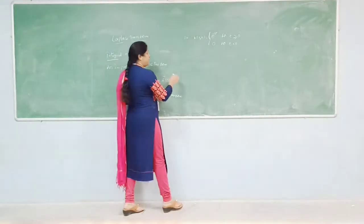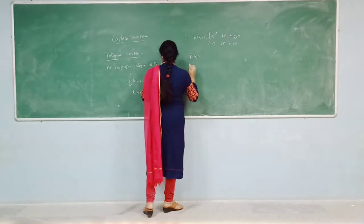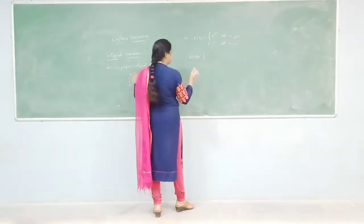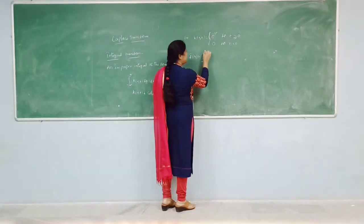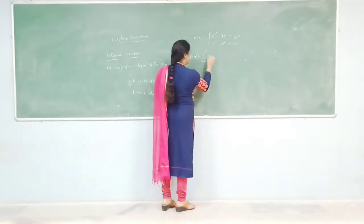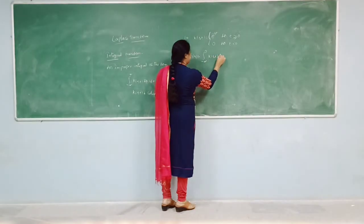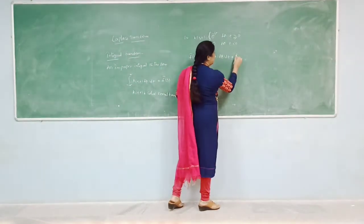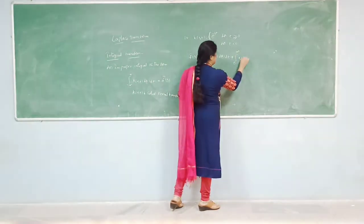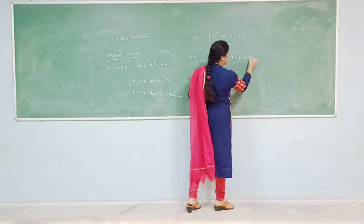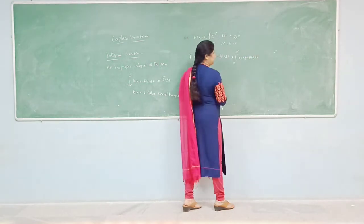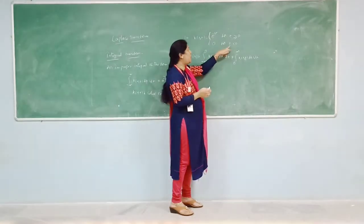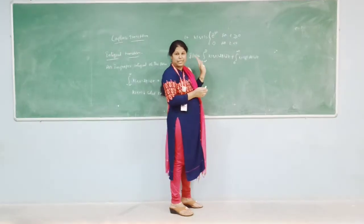So f̄(s) is equal to the integral from minus infinity to infinity, which we can split as: integral from minus infinity to 0 of k(s, t) into f(t) dt, plus integral from 0 to infinity of k(s, t) into f(t) dt. Now, here the value of k(s, t) for all negative values is nothing but 0.